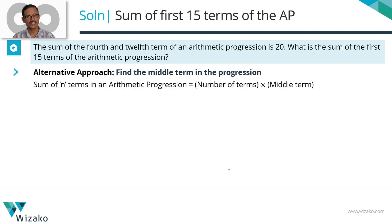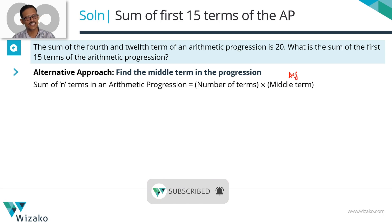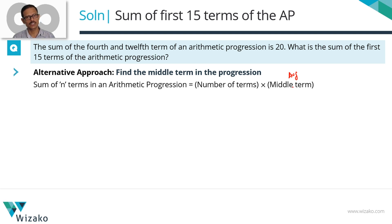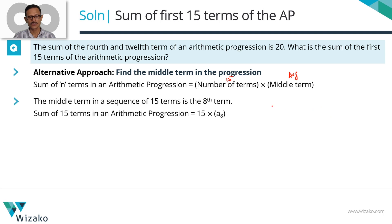Let's look at the alternative approach. The sum of an arithmetic progression equals the number of terms times the middle term. For an AP, the middle term is the average, and the sum equals the number of terms times the average. So if we can compute the middle term, and we know there are 15 terms, the middle term is the 8th term, A8. If we can find the value of A8, we have the answer.